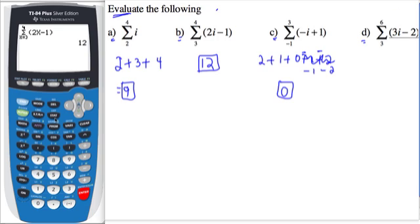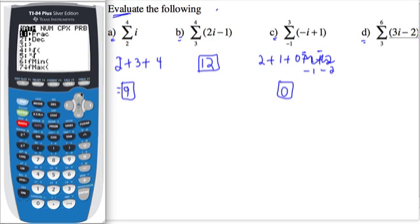Last, one more on the calculator. We go to math, we go to summation notation. You start with x at 3 and go to 6, and the expression is 3x minus 2, which is 46.